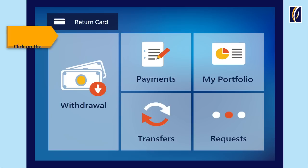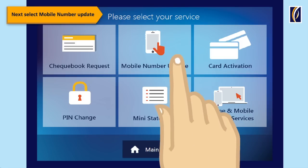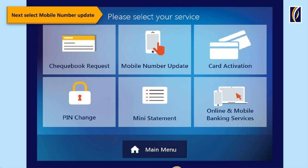Click on the Request tab. Then, select the tab of Mobile Number Update.